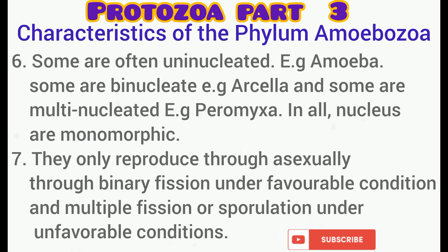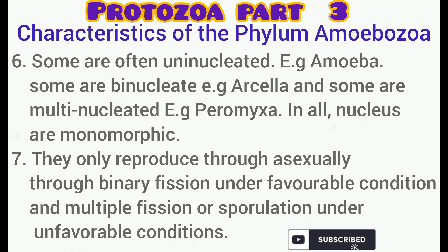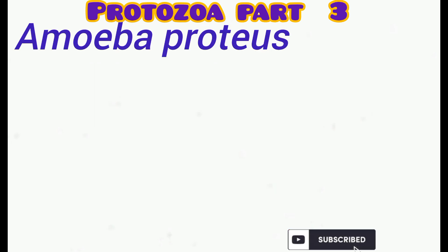Their nuclei are monomorphic, meaning they possess one kind of nucleus, unlike the ciliates which exhibit nuclear dimorphism, possessing two kinds of nucleus — the micro and macro nucleus. They usually reproduce through binary fission under favorable conditions, while under unfavorable conditions they reproduce through multiple fission or sporulation.